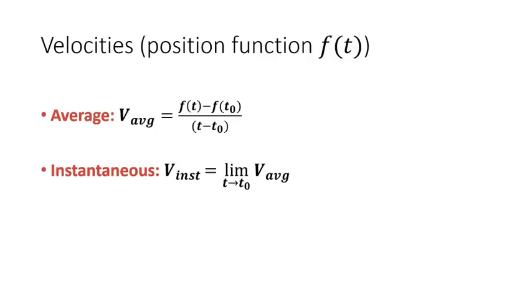For the instantaneous velocity, we just take the limit of the average velocity function that we solve for from above, evaluated as t approaches an initial time.